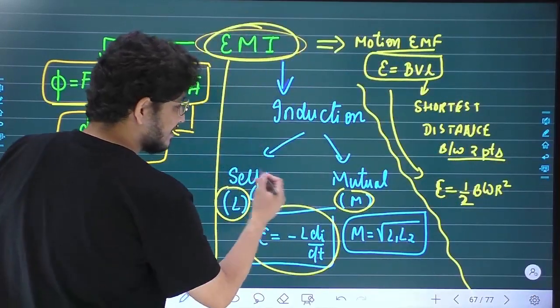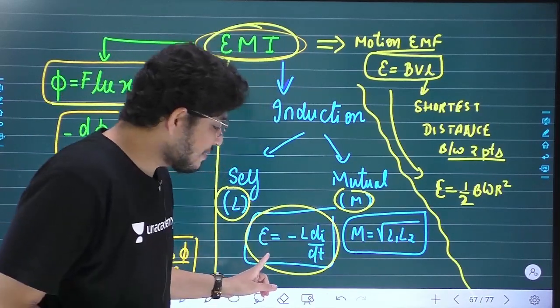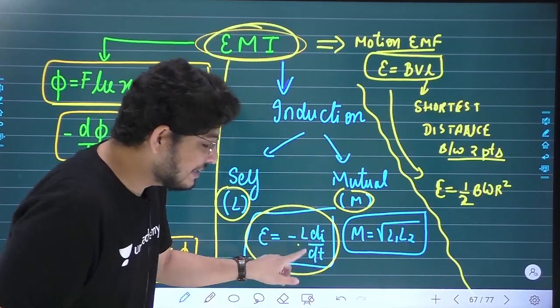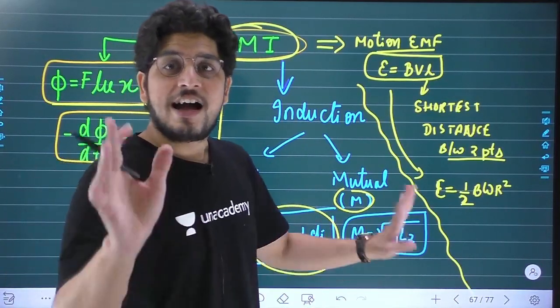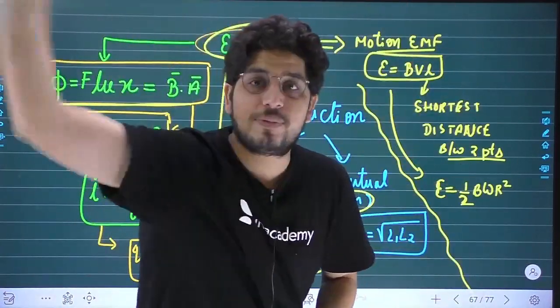If I go further, then here comes self and mutual. Self and mutual relation is this. And if you want to find EMF for self or mutual, both of these cases: here is minus L dI by dt, minus M dI by dt. If I talk about motional EMF, BVL by rotating load, then it comes to half V omega into R square.